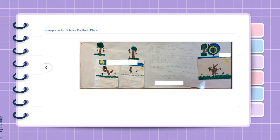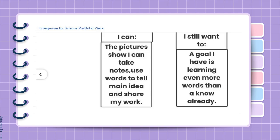It doesn't have to be everything online — as you know with Seesaw, offline things can be photographed and put right in. Those were the pieces she chose, and at the end she had that anchor paper showing the things she said she could do and what she still wanted to work on. She really wanted to grow her vocabulary, so that was one of her goals.